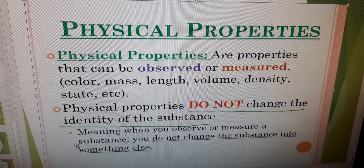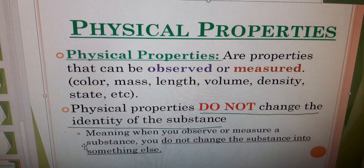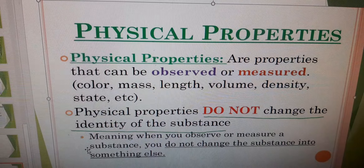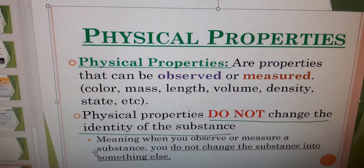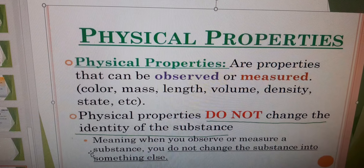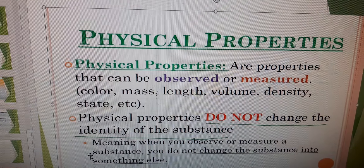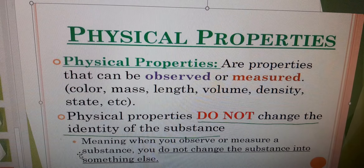Before that, what do you mean by the physical property of a substance? Physical property means any property that can be observed or measured — for example, color, mass, length, volume, density, state, etc. If I ask you one physical property about yourself, suppose you say your height is 5 feet — that is a physical property. Or the color of your eyes is black — that is also a physical property. Physical properties do not change the identity of the substance.